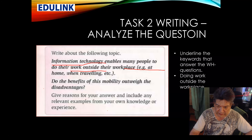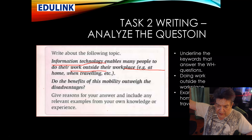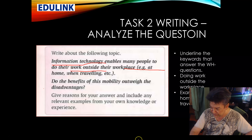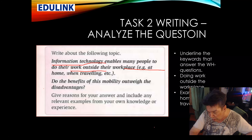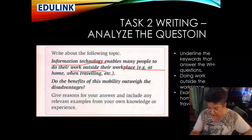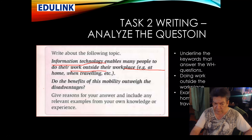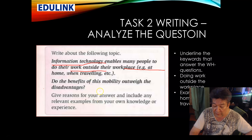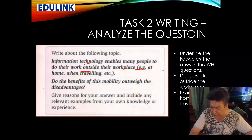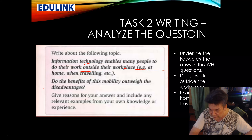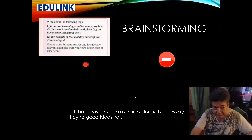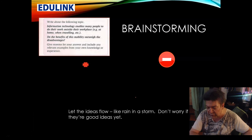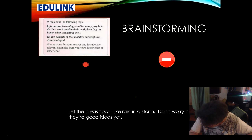Now another very important question is: how many parts are there to this question? Advantages and disadvantages — two? No. You also have to talk about the workplace, the home, and traveling. Even though they're just examples, those are the two examples they give you. You don't have to talk about the advantages and disadvantages of each one, but both need mentioning — benefits and disadvantages.